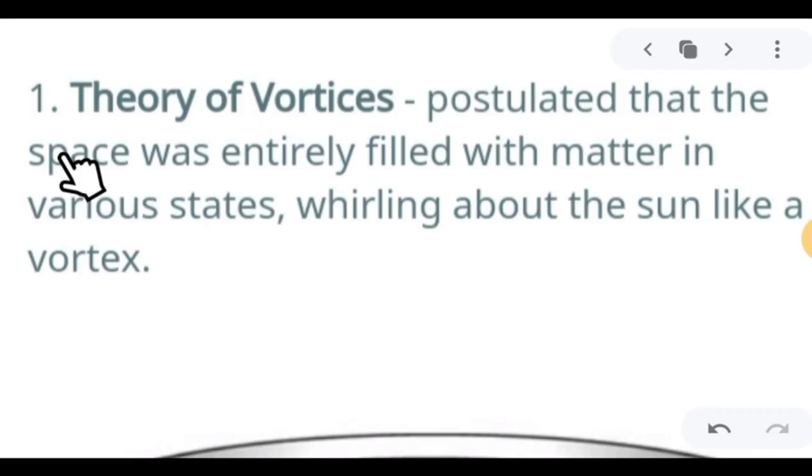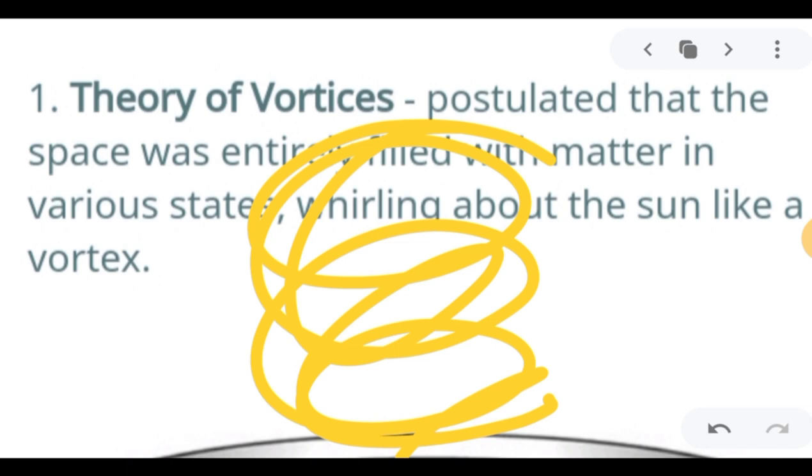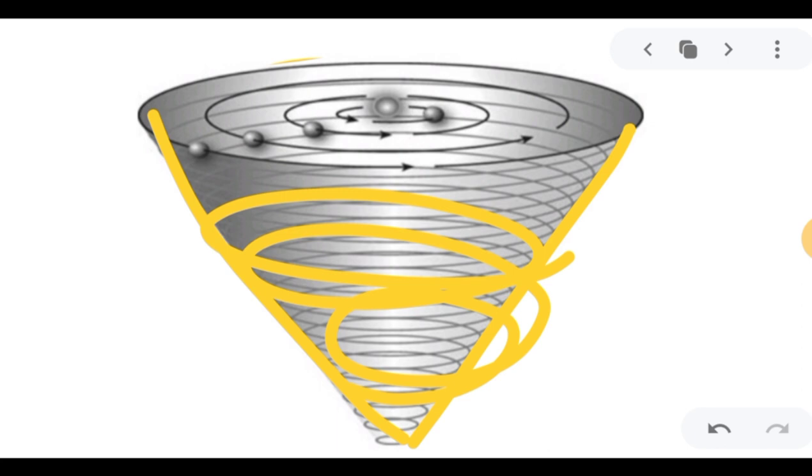The first theory that we will be discussing is the Theory of Vortices. The Theory of Vortices postulated that the space was entirely filled with matter in various states, whirling about the sun like a vortex. The rotation is like when you play with a spinning top - as it swirls or whirls, it creates orbits where it can capture cosmological bodies, forming the solar system.